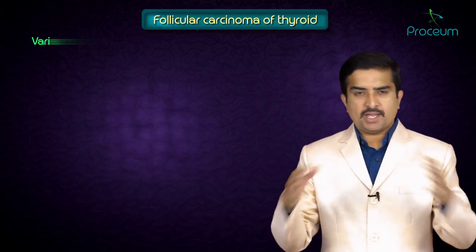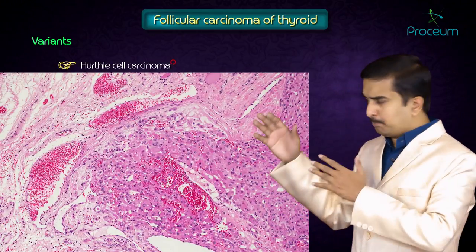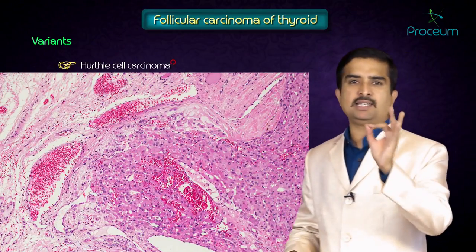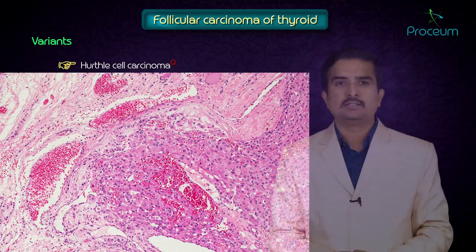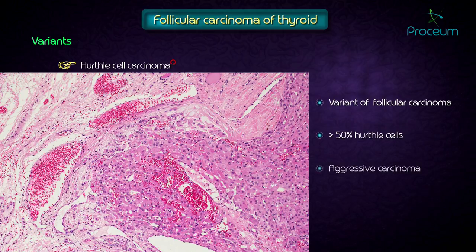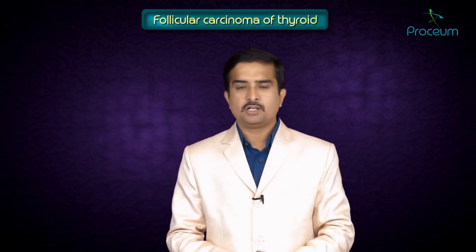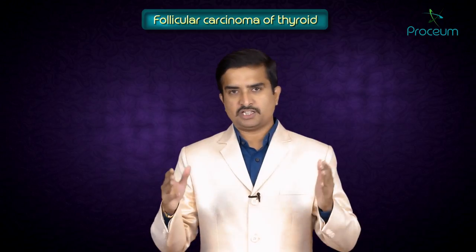An important variant of follicular carcinoma is Hurthle cell carcinoma, where greater than 50% of the cells are Hurthle cells. It is an aggressive carcinoma usually seen in adult females. This is what you should know about follicular carcinoma of the thyroid.